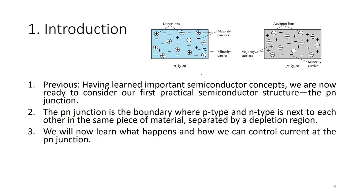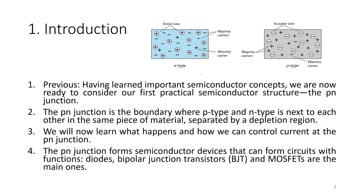This depletion region is powerful enough to allow current flow in a single direction. PN Junction forms semiconductor devices that can form circuits with functions. With just one PN Junction, you can form a diode. With two PN Junctions in an NPN or PNP structure, you can form a bipolar junction transistor. And with two heavily doped N-plus diffusion regions in a P-type substrate, you can form a MOSFET — all because of PN Junction actions.